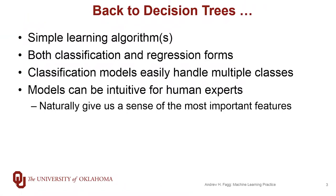One example of individual models are our decision trees. The learning algorithm is relatively simple. Decision trees have both classification and regression forms. In the case of classification, our decision trees can handle more than two classes very naturally, whereas for a lot of our decision surface approaches, we actually had to create multiple models in order to handle that K is greater than two case.